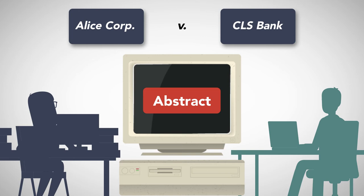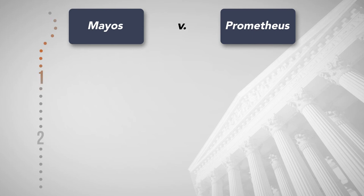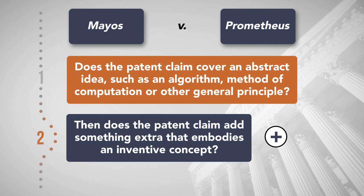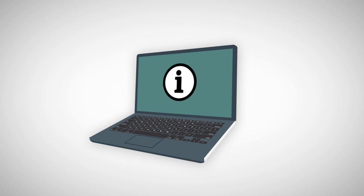This was insufficient to transform the abstract concept into a patent-eligible invention. The court employed a two-step analysis from an earlier case, Mayo v. Prometheus. First, does the patent claim cover an abstract idea such as an algorithm, method of computation, or other general principle? If so, does the patent claim add something extra that embodies an inventive concept? Merely requiring computer implementation does not transform an abstract idea, such as computer software, into a patent-eligible invention. The patent office and lower courts struggled to consistently apply the Alice holding.